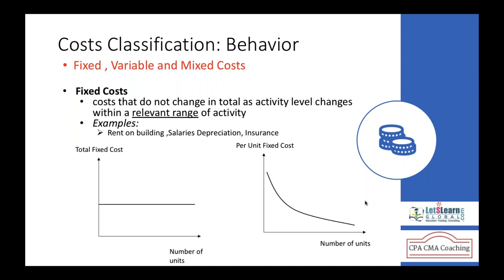Fixed cost is a cost which remains constant within a relevant range — in a production capacity or a time period, the amount remains the same. Examples include rent, insurance, depreciation, property taxes, monthly salary of a supervisor or manager, and factory manager salary, irrespective of production.